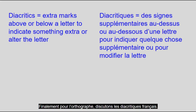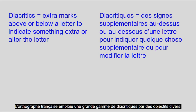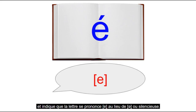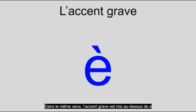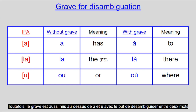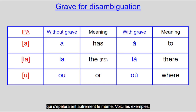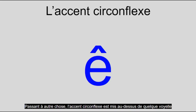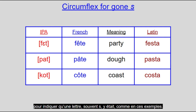Finally for the orthography, let's discuss French diacritics. French orthography employs a wide range of diacritics for various purposes. First, the acute, or l'accent aigu, only appears on E and indicates that the letter is pronounced /e/ rather than /ɛ/ or silent. Along similar lines, the grave, or l'accent grave, is put above E to indicate a pronunciation of /ɛ/. However, the grave is also put above A and U with the purpose of disambiguating between two words that would otherwise be spelled the same, like à vs a, or où vs ou, as well as the word déjà, which has it because its etymological component was spelled with it. Moving on, the circumflex, or l'accent circonflexe, is put over any vowel to indicate that a letter, often S, used to be there, like in these examples. However, it could also represent a now-gone vowel, especially if it's there for disambiguation.